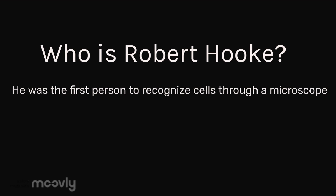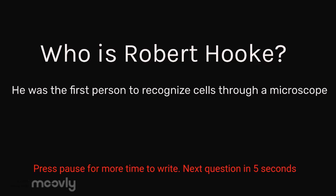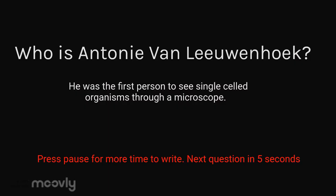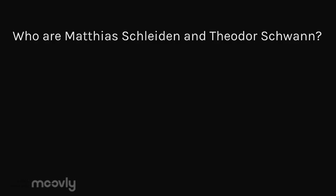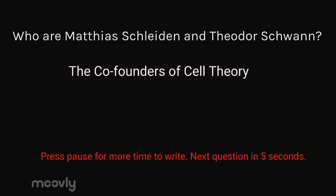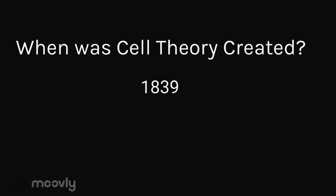Time to stop and check your notes. These are the things you'll need to know to move forward with your lesson. Who is Robert Hooke? He was the first person to recognize cells through a microscope. Who is Antony van Leeuwenhoek? He was the first person to see single-celled organisms through a microscope. Who are Matthias Schleiden and Theodor Schwann? They are the co-founders of Cell Theory. When was Cell Theory created? 1839.